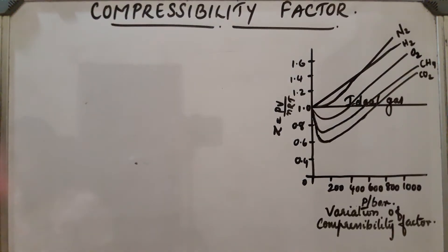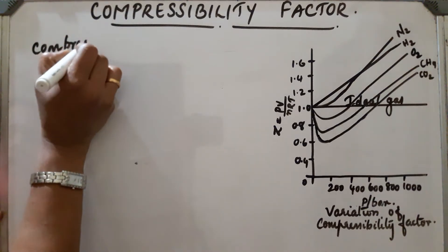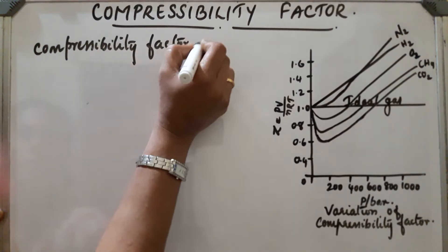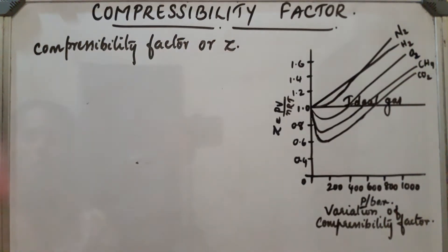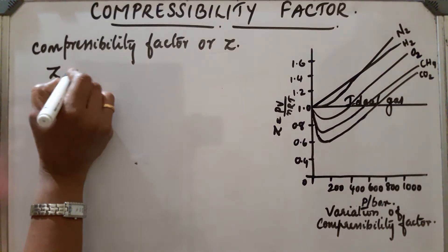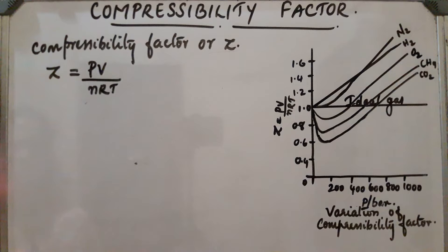Compressibility factor: deviation from ideal behavior can be measured in terms of compressibility factor, or Z. So deviations of real gases from ideal behavior can be measured using this term Z. Z is the ratio of PV to nRT, so Z is equal to PV by nRT.